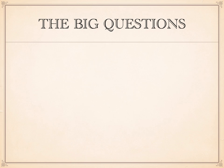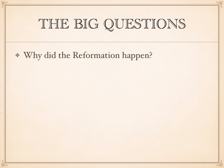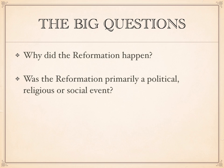The big questions that come out of this unit begin with: why does the Reformation happen? If the Catholic Church had problems and corruptions and criticisms that went back decades or centuries, why is it in the 16th century that we see the Reformation really happen? What's special about this period? Next, you'll need to think about whether the Reformation was primarily a political event, a religious event, or a social event.